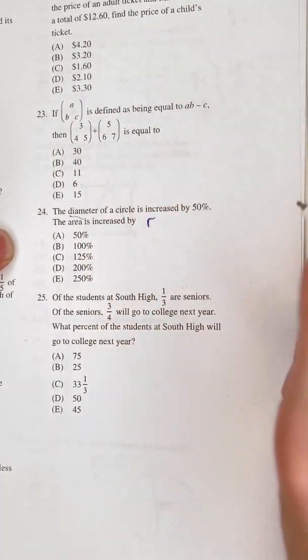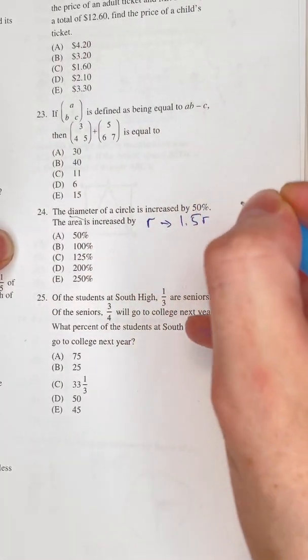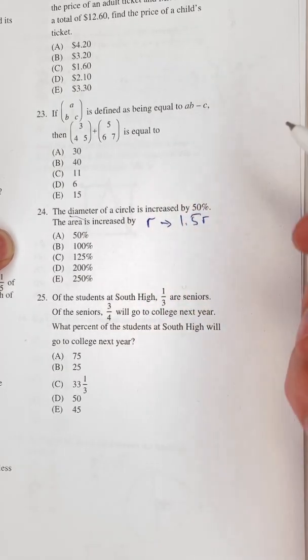Instead of just r in the formula, we now have 1.5r because the 0.5 is the plus 50 percent.